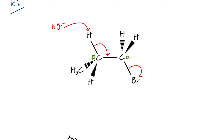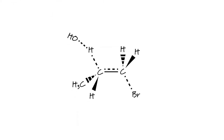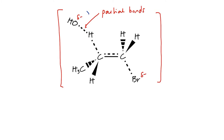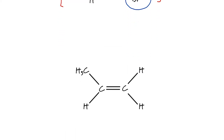In the E2 mechanism there is a very short-lived transition state in which we have partial bonds between the hydroxide, the hydrogen, the carbons, and the bromine, with the negative charge spread over the molecule from the oxygen to the bromine. The dashed lines indicate partial bonds. The hydroxide ion takes the proton away, the C–Br bond breaks, and we end up with an alkene — plus water and the bromide ion, which has left the molecule.